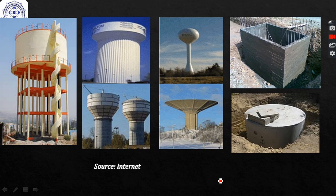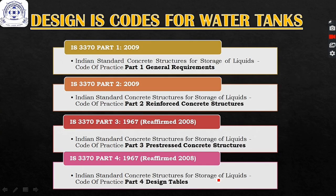Every RCC structure design requires a set of codes and specifications which need to be followed, available in the form of IS codes. For the design of RCC water tanks, we require four codes: IS 3370 Part 1 to Part 4.